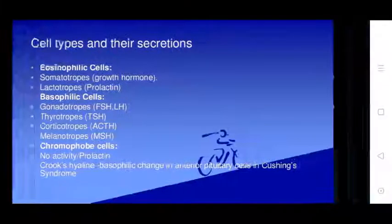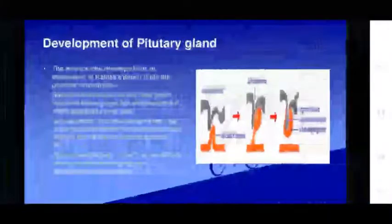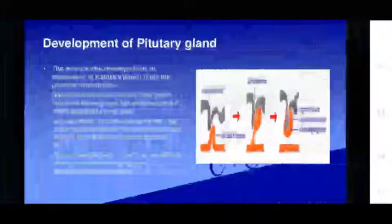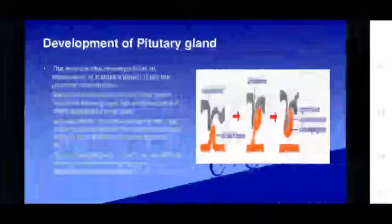Regarding the development of the pituitary gland, the anterior lobe develops by the evagination of ectoderm from the primitive oropharynx. Specific transcription factors regulate the differentiation of pluripotent stem cells. Somatotrophs, mammotrophs, and lactotrophs are derived from stem cells that express the pituitary transcription factor Pit-1. Steroidogenic factor-1 (SF-1) and GATA-2 are factors required for gonadotroph differentiation.